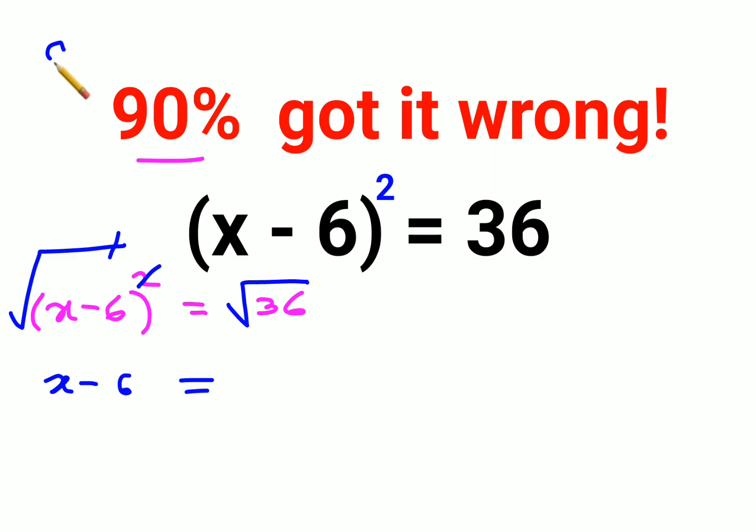Now please understand whenever you have a variable, okay, that is equal to some number. Then in that case, when you put square root or you take square root on both sides, you will say a equals to plus minus root of b. Only in case of variable, it is like that.